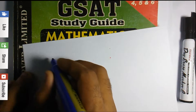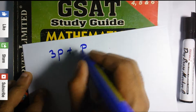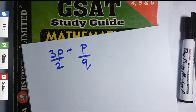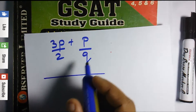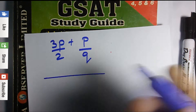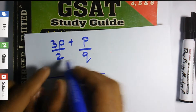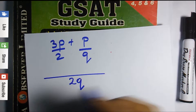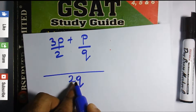Let's look at another example. Let's say we have 3p/2 + p/q. The first thing we need is to find the LCM. Now q is a variable — it can represent any number. To find the LCM when one denominator is a variable, we just multiply the denominators together, so the LCM will be 2q.